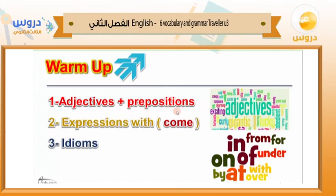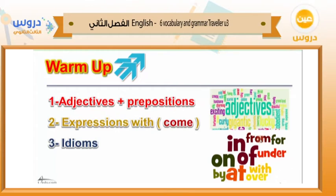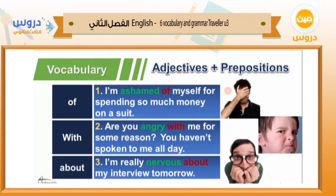First, we're going to talk about adjectives and prepositions. We have a bunch of prepositions: in, on, by, at, over, with, of, under, for, and from. We also have many adjectives like exciting, charming, handsome, funny, good, bad, old, and so on. Let's start with adjectives and prepositions — when they come together, the meaning changes a little bit.